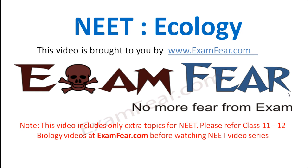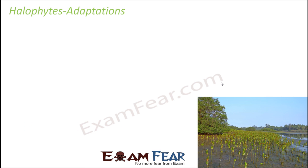This video on neat ecology is brought to you by ExamFear.com. We will discuss the adaptations of halophytes. Halophytes are plants which survive in saline habitats — habitats which have very high salt content. Examples of saline habitats include saline ponds, seashores, and marshy areas. Mangroves, the marshy areas, also fall under the category of saline habitat, and plants growing there are halophytes.